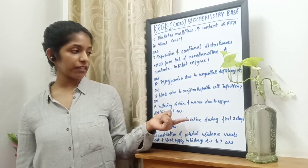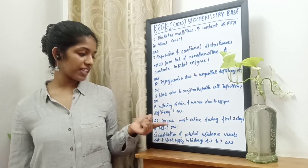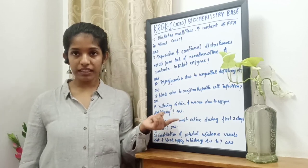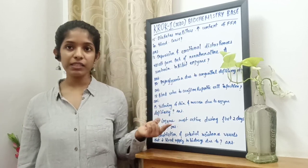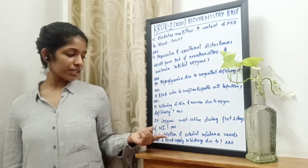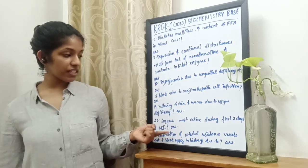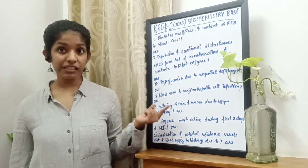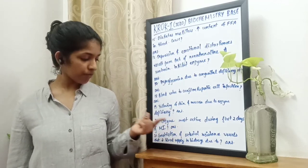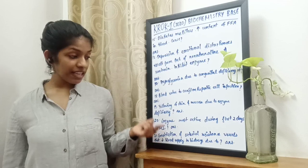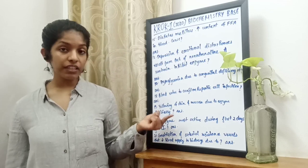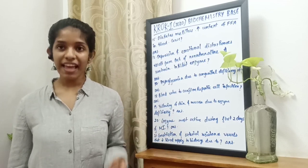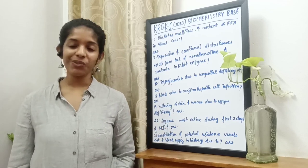Next question: the enzyme that is most active during the first two days of myocardial infarction is aspartate aminotransferase (AST). The next question: constriction of arterial resistance vessels that decreases blood supply to the kidneys is due to angiotensin 2.